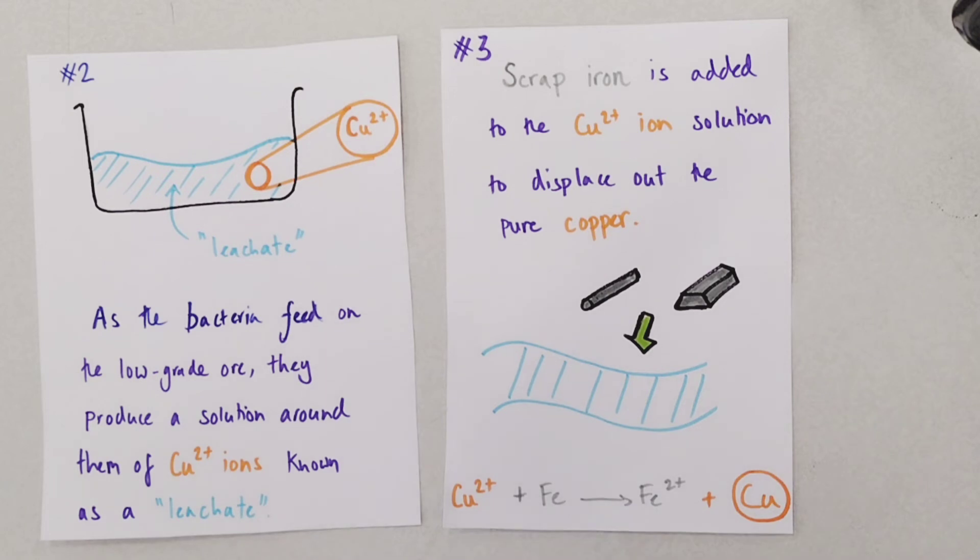And then finally, similar to the phytomining technique, we then separate out that leachate, that solution with the copper ions in it and we add some scrap recycled iron to that solution and the more reactive iron should displace out the less reactive copper producing pure copper. As a result, it's another example of a redox or oxidation and reduction reaction.